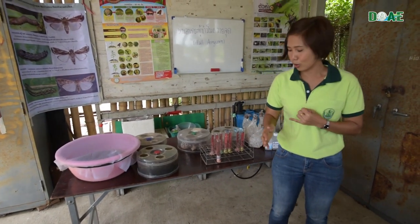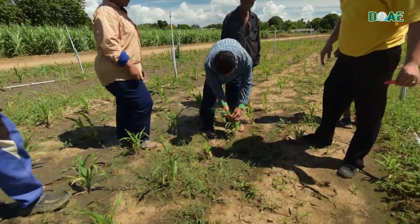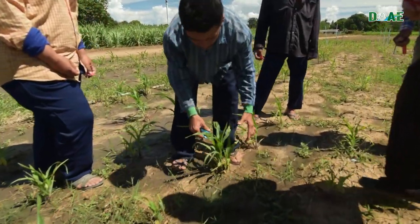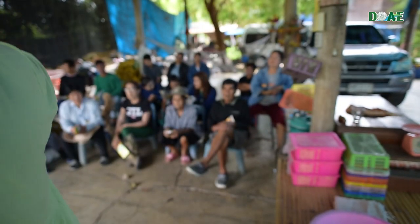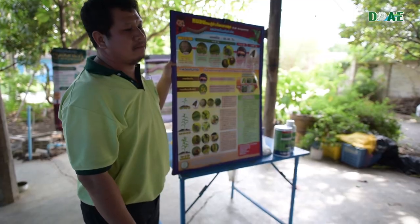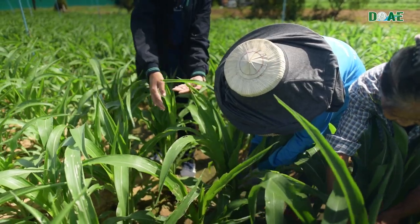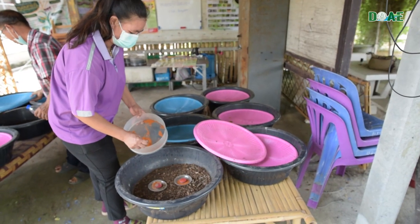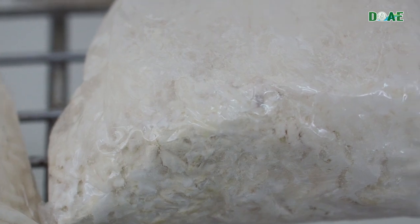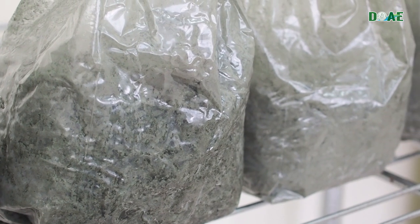IPM for fall armyworm has been implemented into farmer practice through a unit called the Community Pest Management Center, or CPMC. The activities of the Center include serving as a learning center for knowledge and technology transfer on pest management, aiming to develop farmers to be self-reliant in pest management, producing bioagents and other necessary materials for farmer members and providing these to others in the community.